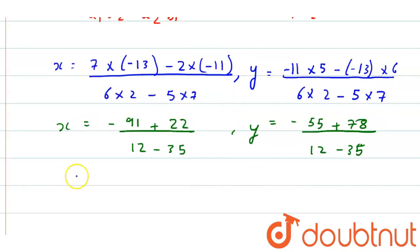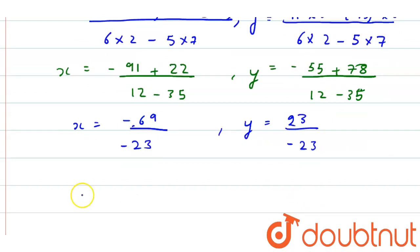Solving further, we will get x equals minus 69 by minus 23, and y equals 23 by minus 23. So we can write x will be 3 and y will be minus 1.